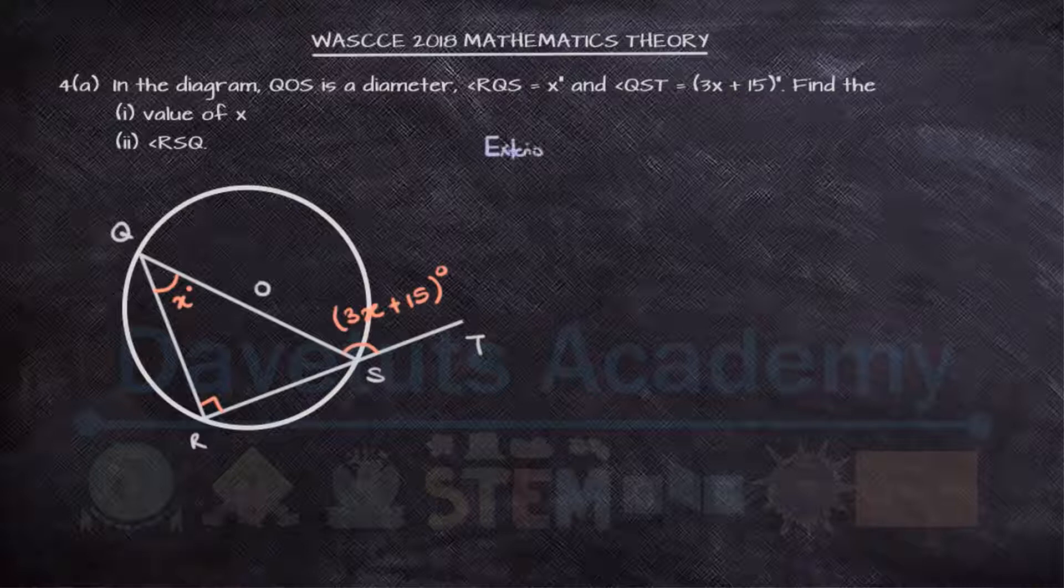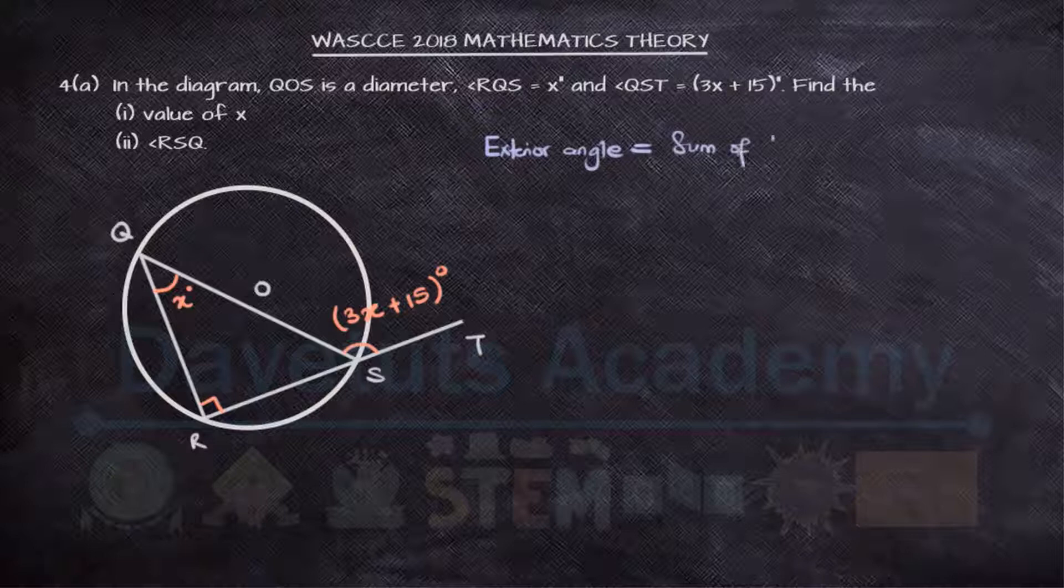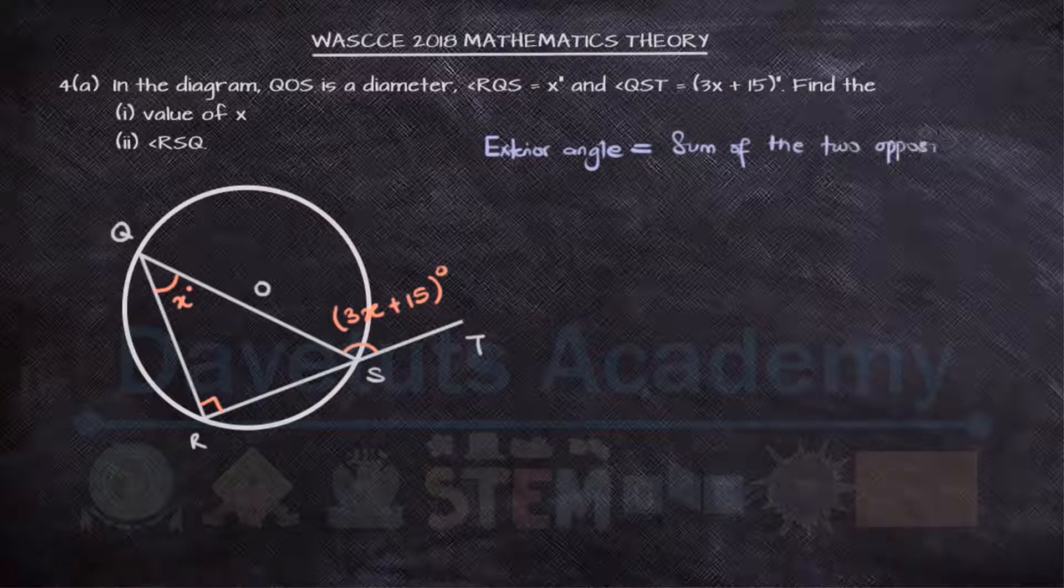Now, there are many ways we can solve this question, but first I'm looking at a triangle with an exterior angle, and I can say the exterior angle is the sum of the two opposite interior angles.